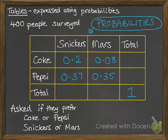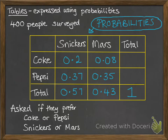So they are going to look like this. We've got a 0.2 probability that the person said they prefer Coke and they prefer Snickers, for example. You do the same things with your totals — so 0.2 plus 0.37 is 0.57 for our total probability for Snickers, and so on with the Mars and the Coke and the Pepsi.